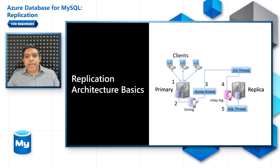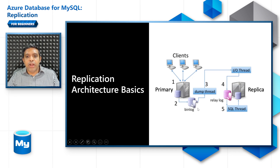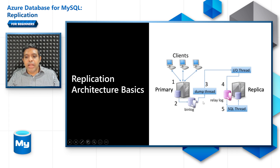Looking at the replication architecture in this picture, you can see that clients write data into the database, and a copy of the change is written into the binary log. The replica server has an IO thread which connects to the dump thread of the primary server, reads its data, and writes it into the relay logs. These relay logs are then read by the SQL thread and written into the replica. This is how MySQL replication works natively.